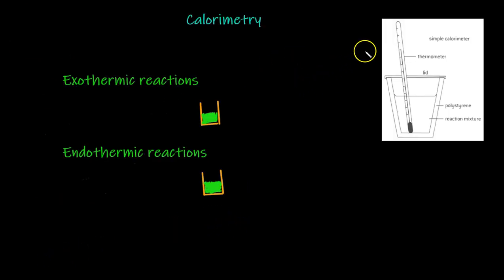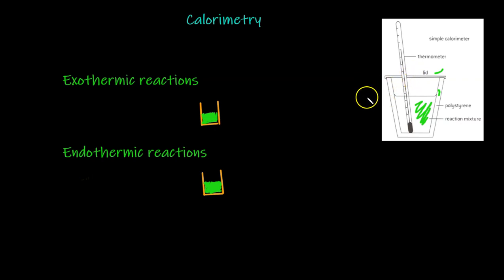Moving on to calorimetry — on the right is a simple calorimeter with the reaction mixture inside a polystyrene cup with a lid on top to reduce heat loss and a thermometer to measure heat change. The enthalpy of a reaction can be measured experimentally using a calorimeter, which is a device used to measure the amount of heat evolved in a chemical or physical process.